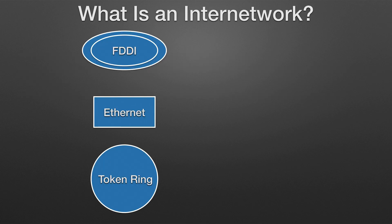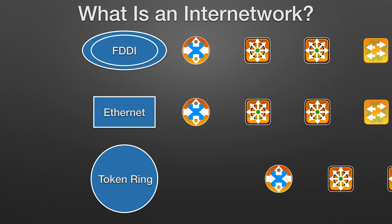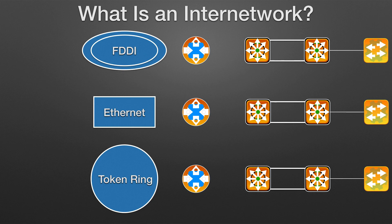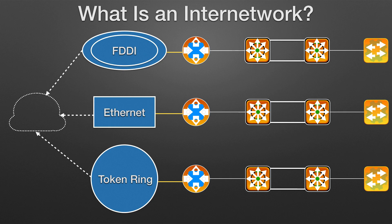What is an Internet Work? An Internet Work is a collection of individual networks, connected by intermediate networking devices, that functions as a single large network. Internet Working refers to the industry, products, and procedures that meet the challenge of creating and administering Internet Works. Here we can see some different kinds of network technologies that can be interconnected by routers and other networking devices to create an Internet Work.